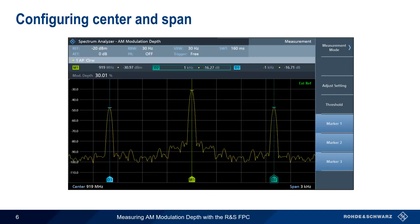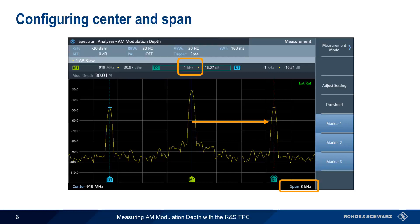Although the FPC handles most of the measurement tasks and calculations automatically, there are several things we need to configure manually. First, we have to specify the center frequency of the carrier. Next, we need to decide on our span. Remember that the modulating frequency determines how far the sidebands are from the carrier. In this example, the modulating frequency is one kilohertz, so the distance from the carrier to the sideband is also one kilohertz. A good rule of thumb when measuring AM signals is to set the span to three times the modulating frequency — in this case, three kilohertz. A span that's too wide or too narrow could lead to incorrect results.